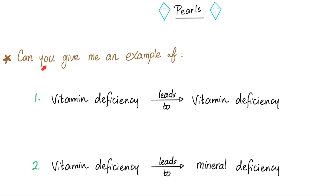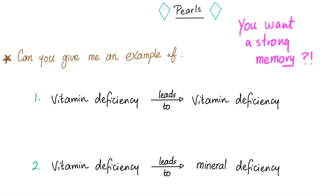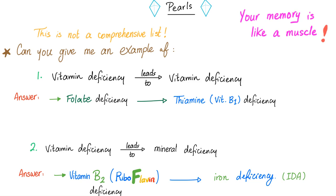Some clinical pearls. Can you give an example of a vitamin deficiency that leads to another vitamin deficiency? Also, can you give an example of a vitamin deficiency that leads to a mineral deficiency? Please pause and try to answer yourself. The answers: folate deficiency can cause B12 deficiency. And vitamin B2 deficiency can cause iron deficiency and iron deficiency anemia.